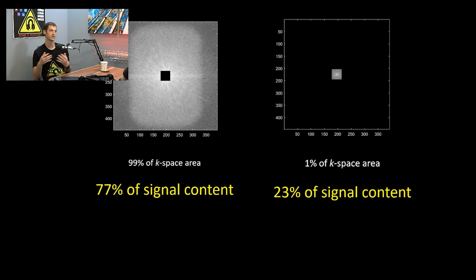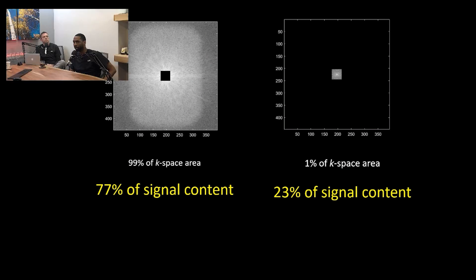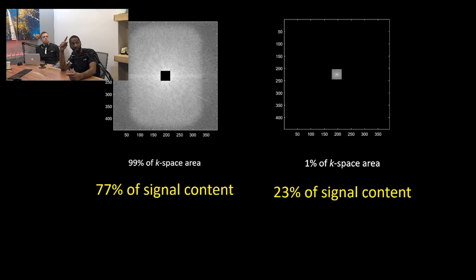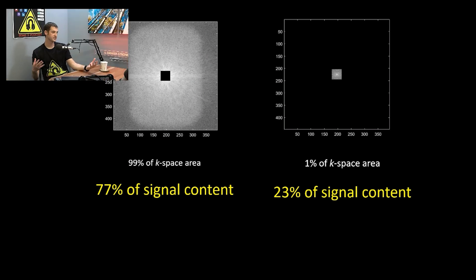When you turn on k-space acceleration you still need a certain amount of signal or you get horrible artifacts. But most of your signal is in the center, so if that's always fully acquired, what's the issue? You still need the edges because that defines edge sharpness in the image. The outer k-space defines edges; the center determines contrast and most of the SNR.